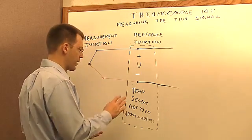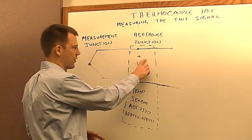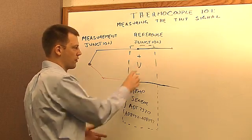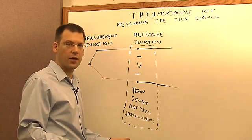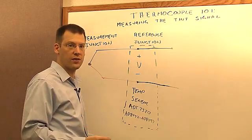As we discussed last time, the signal that the thermocouple generates is quite small. For example, for a K-type thermocouple, you only get about 40 microvolts per degree C.